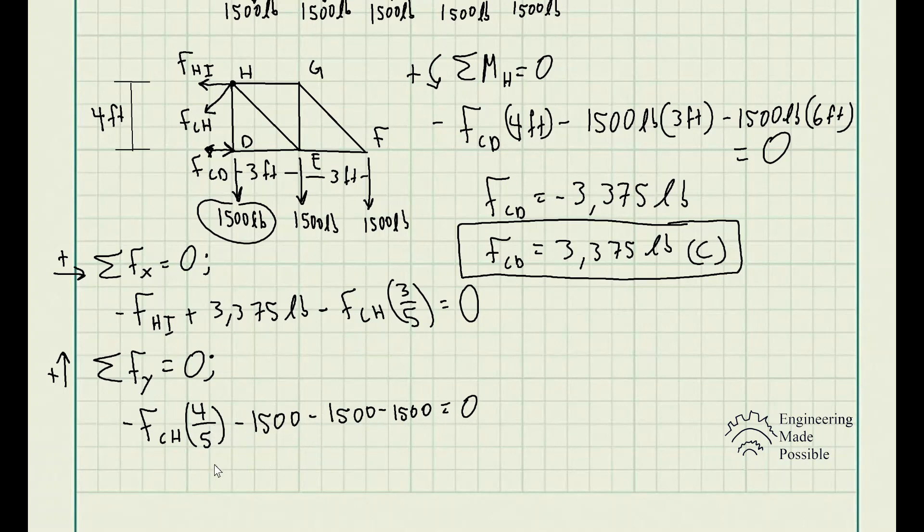And so we have F_CH being equal to negative 5,625 pounds. And since we have a negative, that means this member is also in compression. Since we initially assumed tension, we see that this one is in compression. So F_CH is equal to 5,625 pounds in compression. So here's the other internal force of member CH.